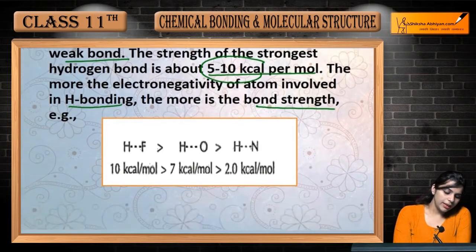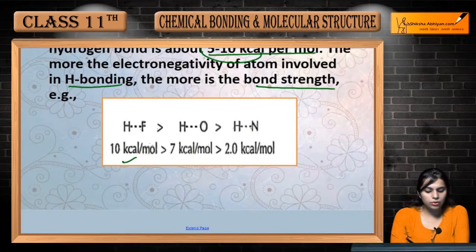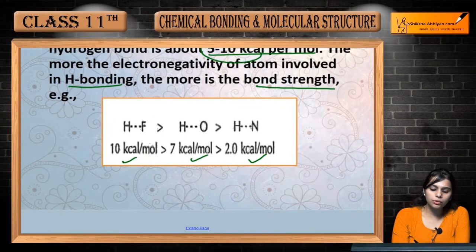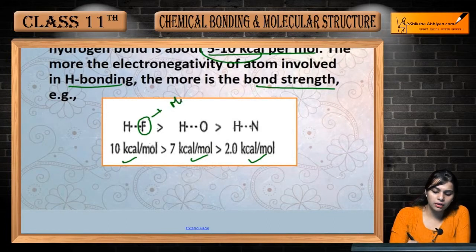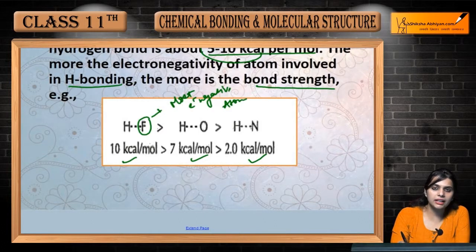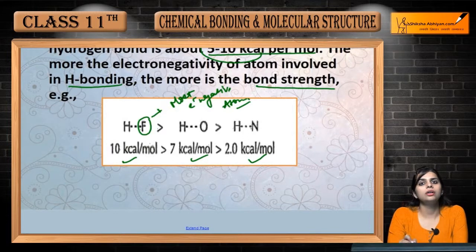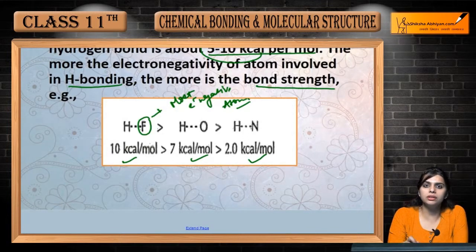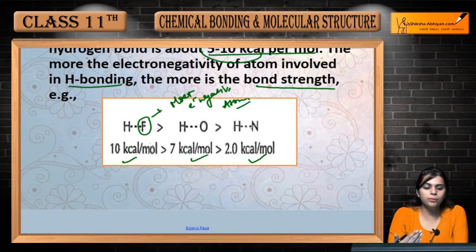The more electronegativity of atoms involved in H bonding, the more is the bond strength. How much our electronegative atom will attach with hydrogen, the more will be the bond strength. If we talk about bond strength, HF will be the most as compared to Oxygen and Nitrogen, because Fluorine is the most electronegative atom — the more electronegative the atom, the stronger the bond.